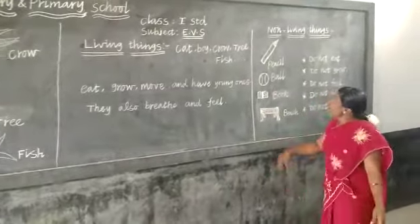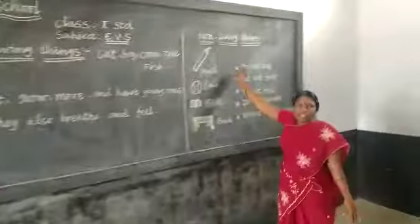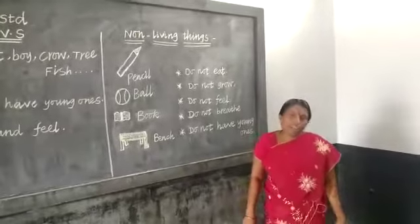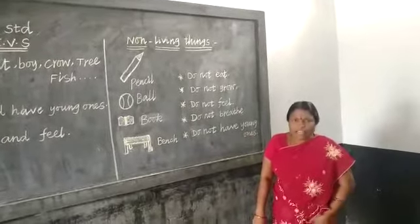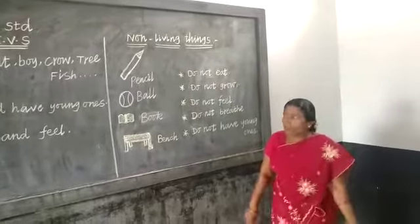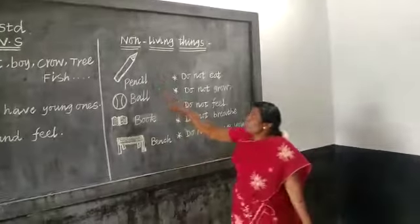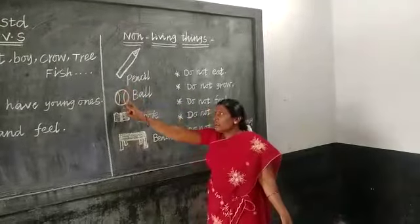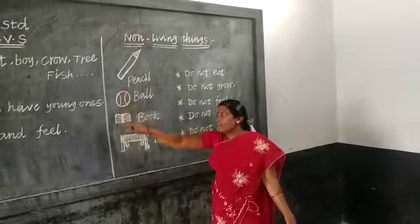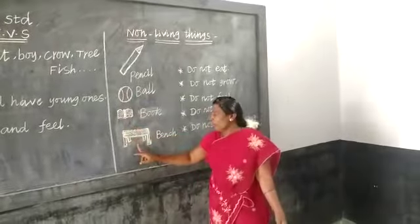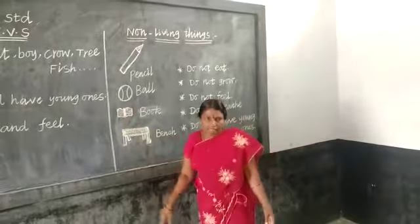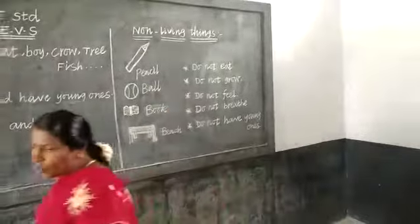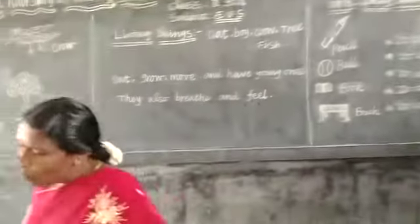Next, we call these non-living things. Non-living things do not eat, do not grow, and do not move. Examples: pencils, ball, book, table, pencil, blackboard, book.